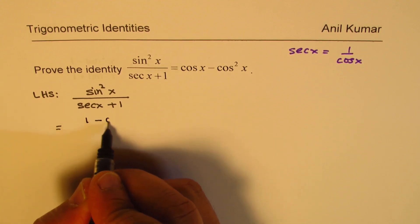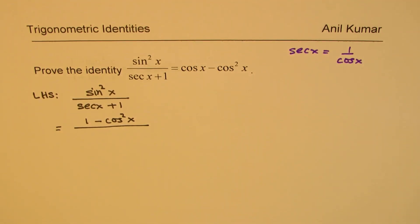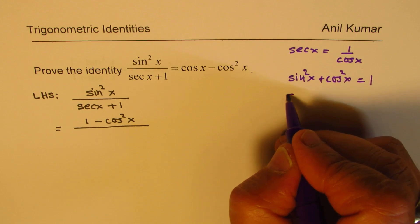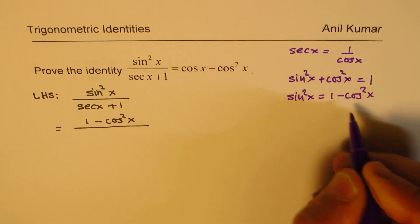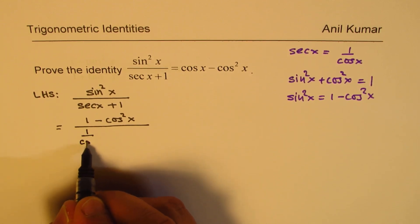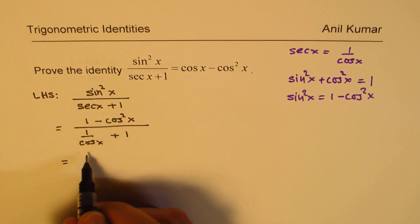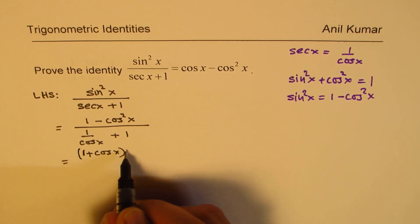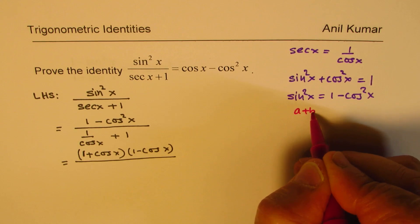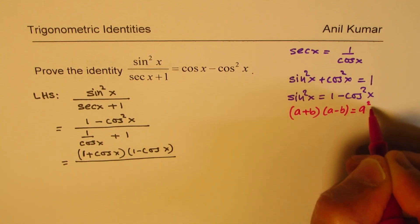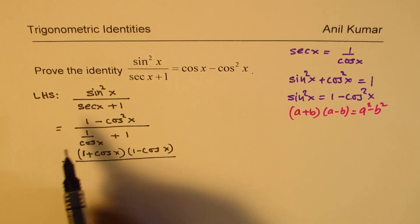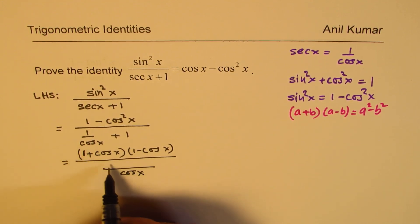Sine squared x can be written as 1 minus cosine squared x, since sine squared x plus cosine squared x equals 1. That is a difference of squares, which factors as (1 plus cosine x)(1 minus cosine x). Secant x is written as 1 over cosine x. Taking a common denominator of cosine x, we get (1 plus cosine x)(1 minus cosine x) in the numerator, with 1 over cosine x in the denominator, so cosine x moves upward.